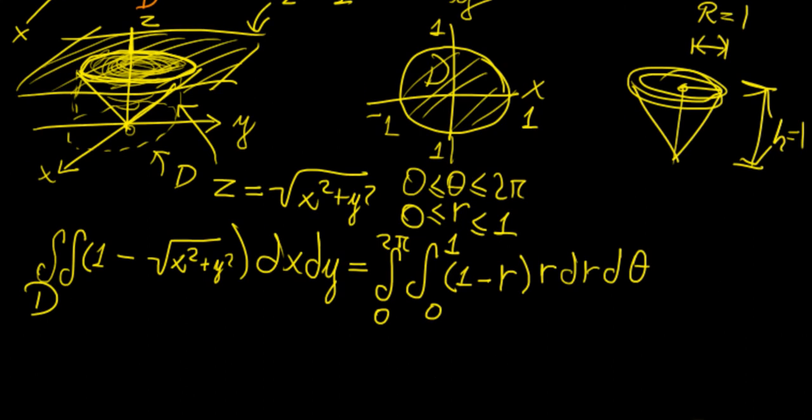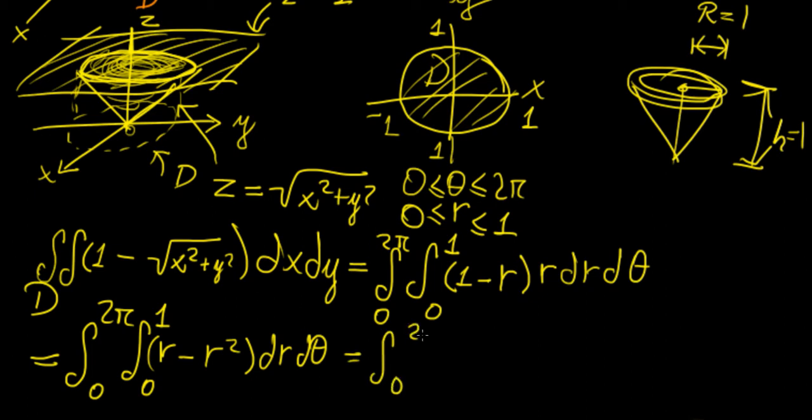Now we can perform integration as normal. From 0 to 2π, 0 to 1, we have r minus r squared dr dθ, which becomes the integral from 0 to 2π.